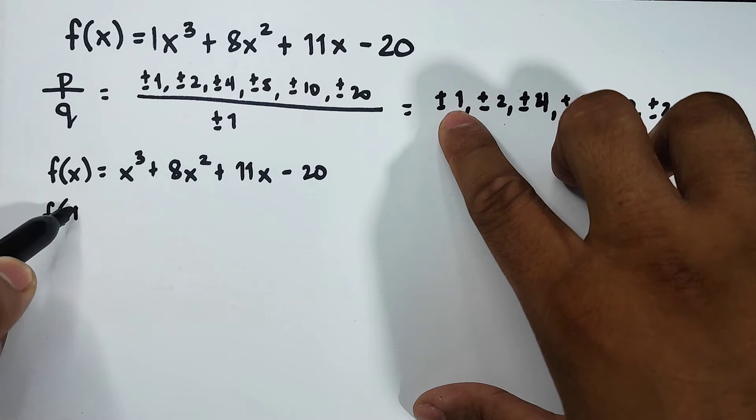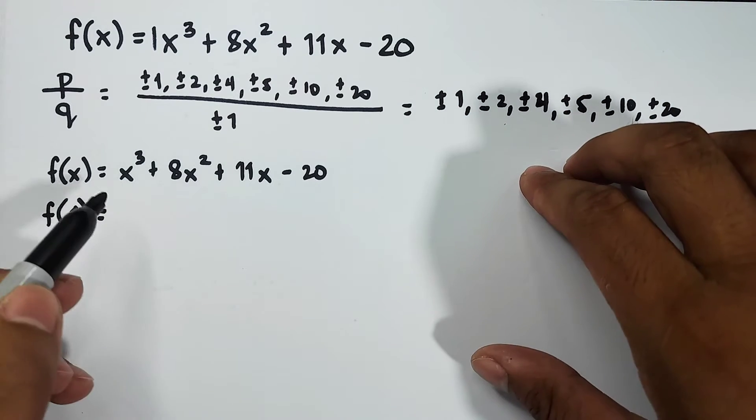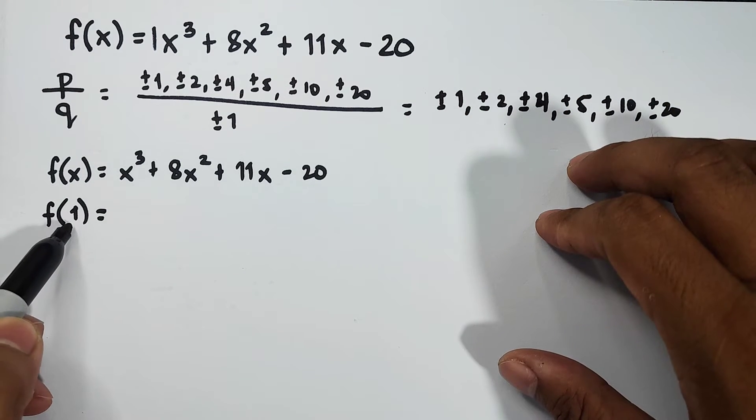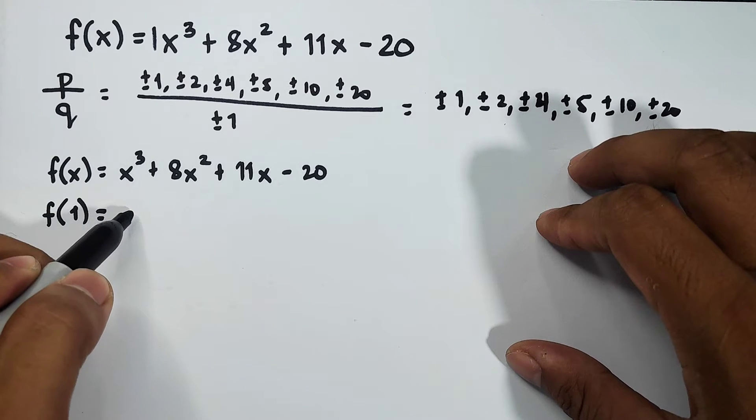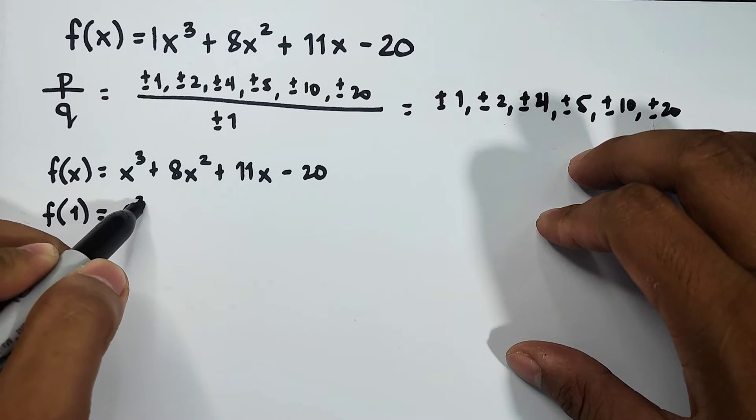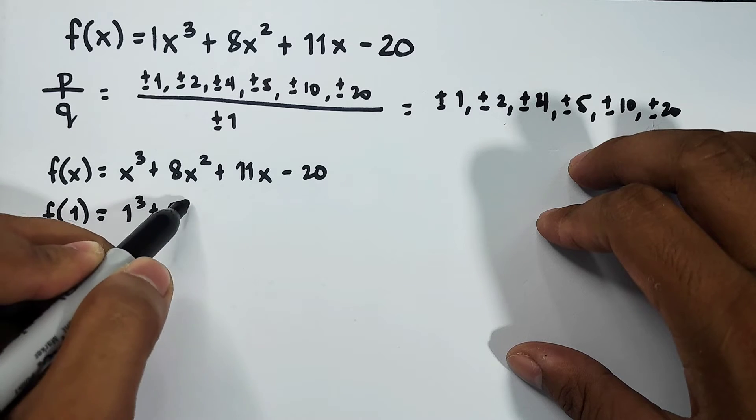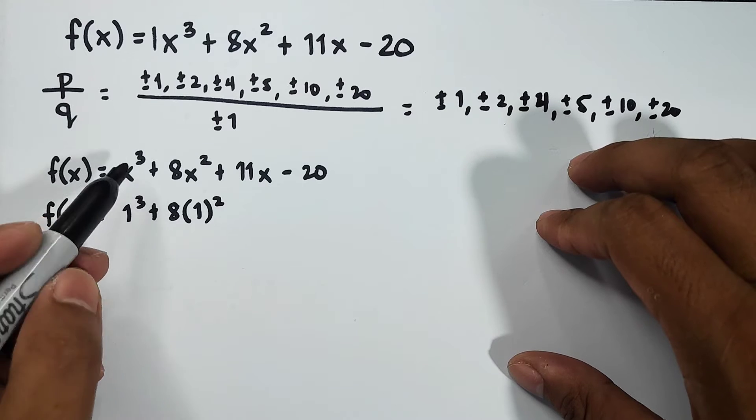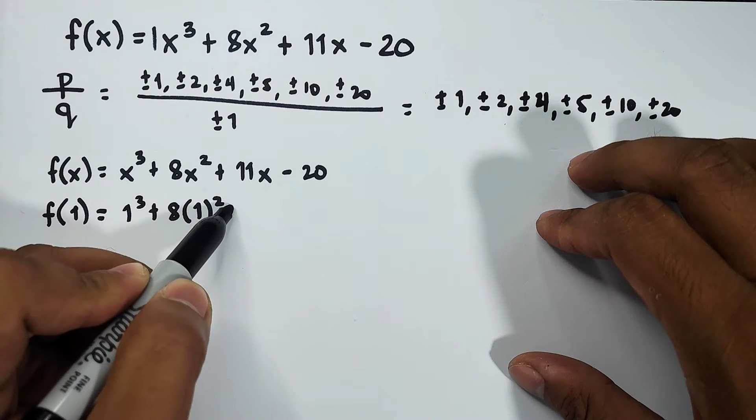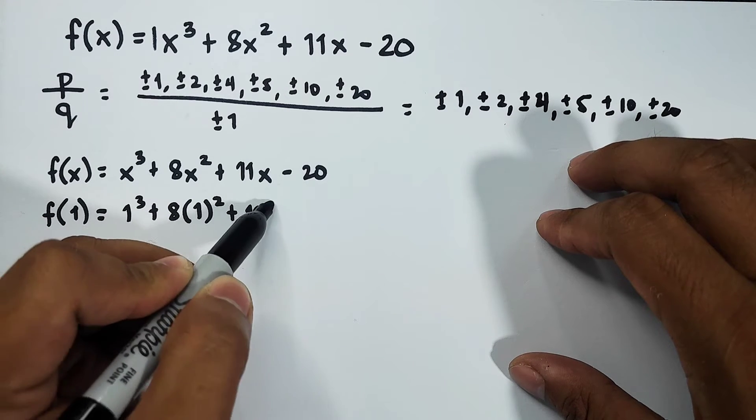It will become f(1). What you need to do is input or substitute this one to the variable x, and that is 1³ + 8(1)² + 11(1) - 20. I'm just substituting the value of 1 or the value of x.